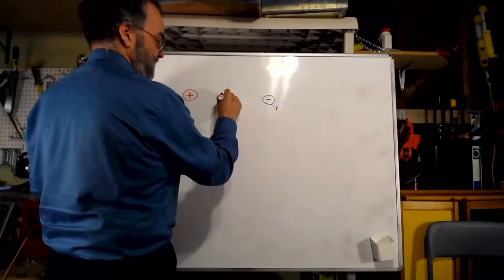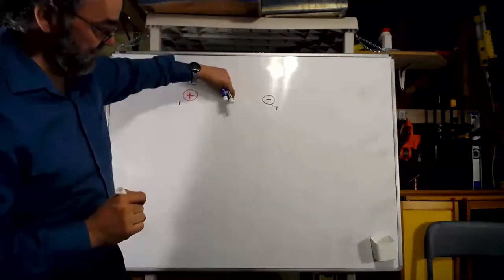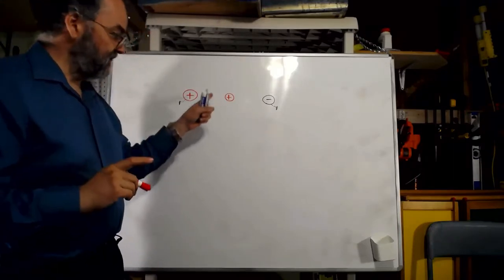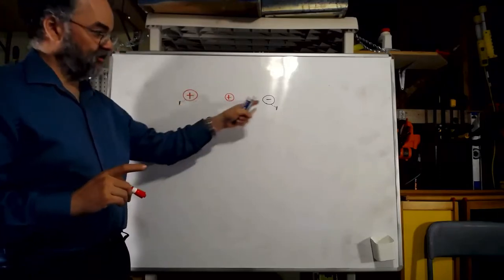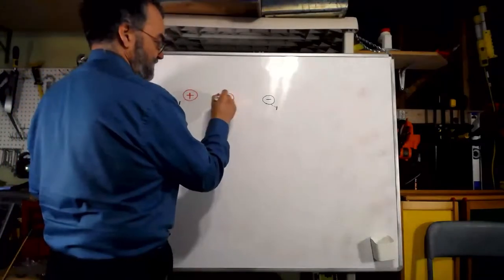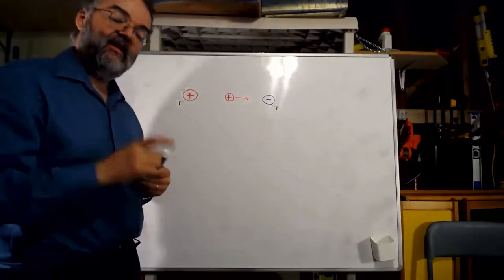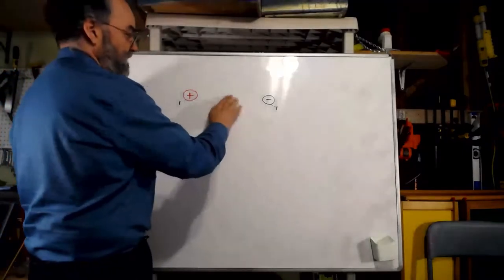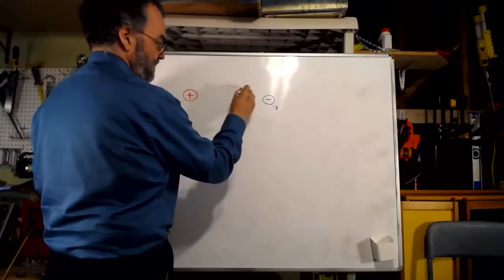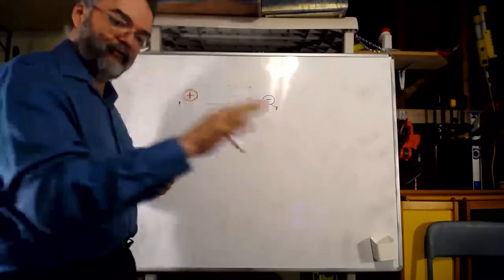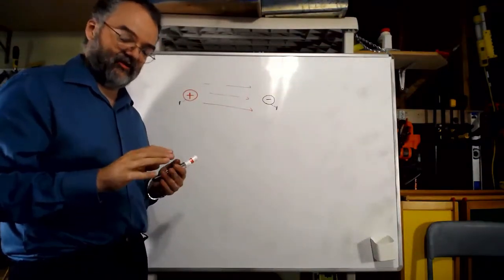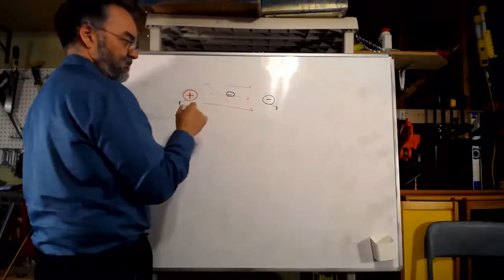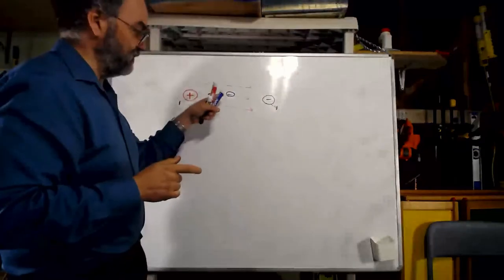Now imagine I set down in the middle a positively charged thing. What will it do? It's going to be repelled from the positive one and attracted to the negative one, so it's going to start moving in that direction. But we know that things don't move unless a force acts on them. What that tells me is that between these two things, there is some sort of force — an electrical field that exerts a force on any charged thing in that field. If I put down a positively charged thing it moves one way, but a negatively charged thing moves the other way. Same force, but it affects positive and negative things differently.